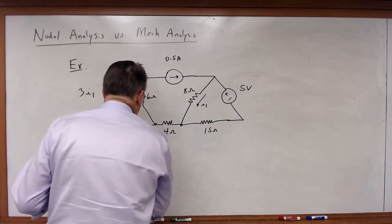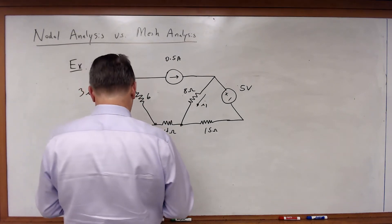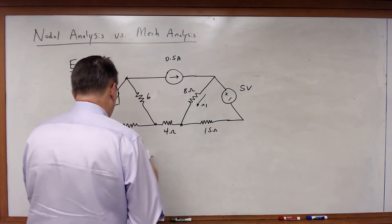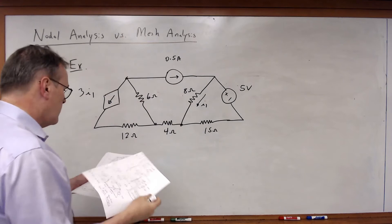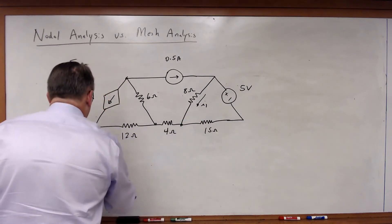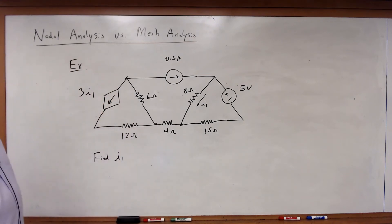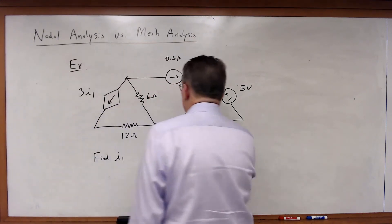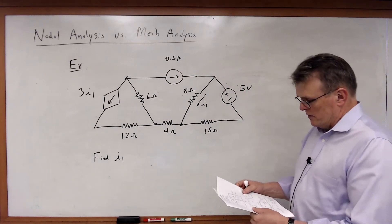All right. So for this circuit, I want to find the value of I1. How do I solve this circuit? Once again, number of KVL versus number of KCL. So looking at this particular circuit,